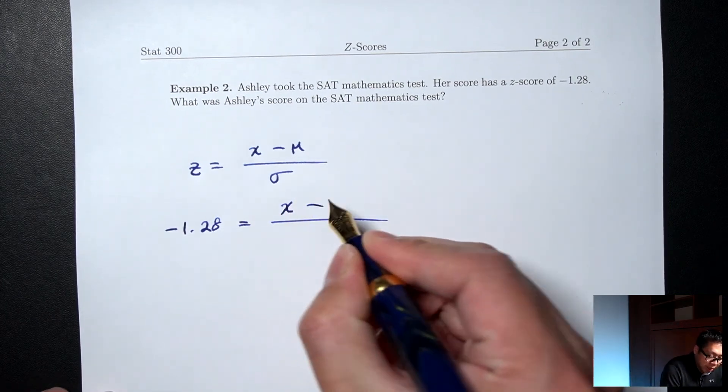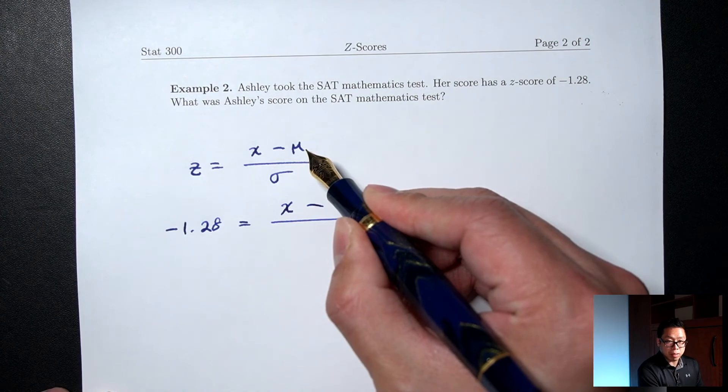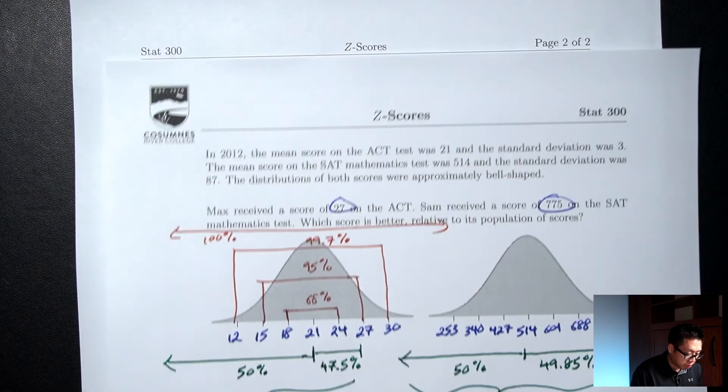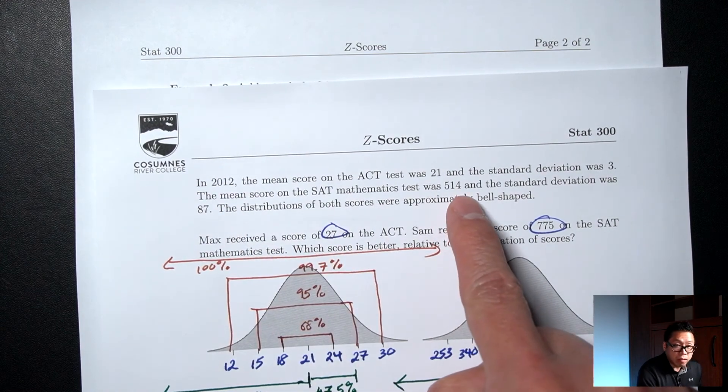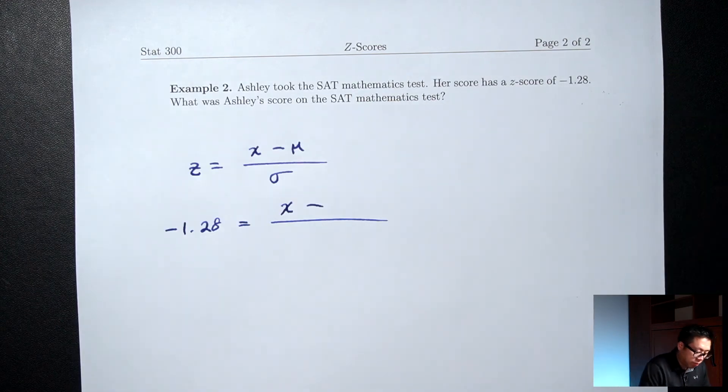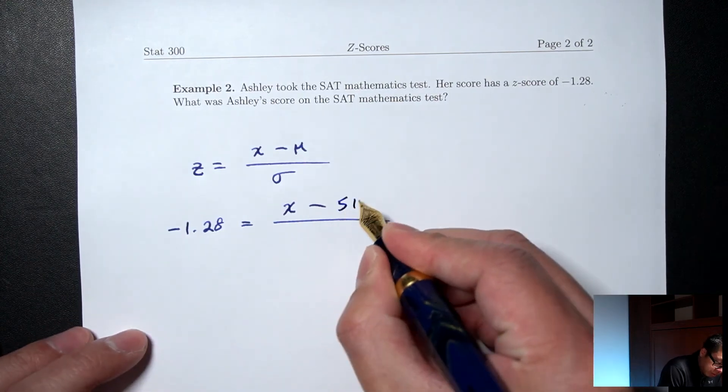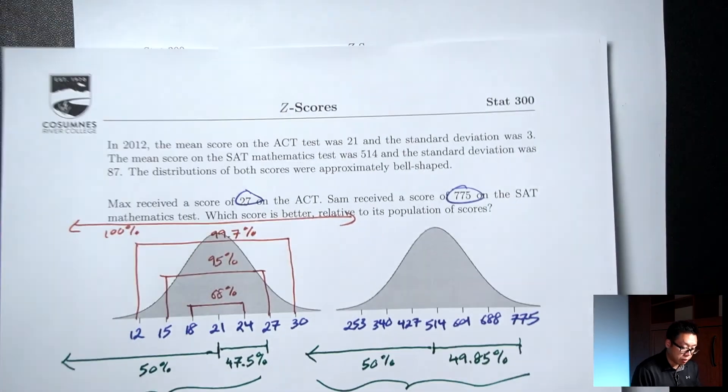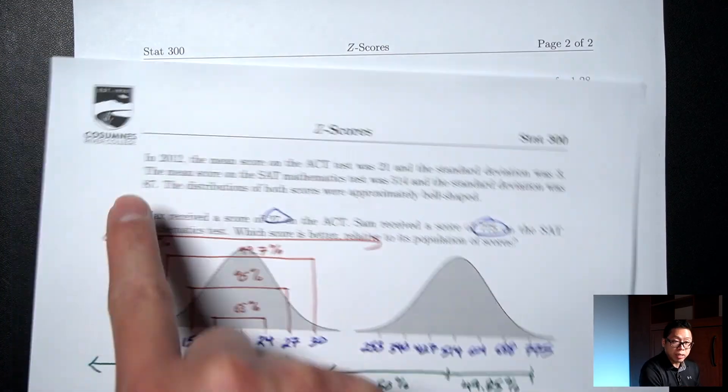That's the symbol for mean. The mean for the SAT math score was 514. And then on the bottom, that's the symbol for standard deviation. The standard deviation for the SAT math was 87.